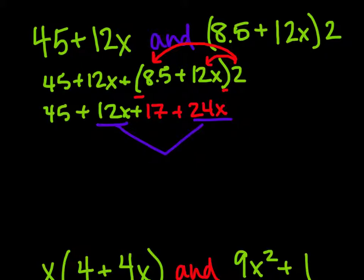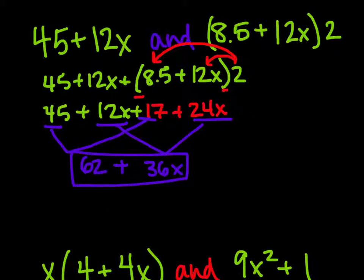So 12x plus 24x gets us 36x. And 45 plus 17 gets us 62. So here is our final expression.